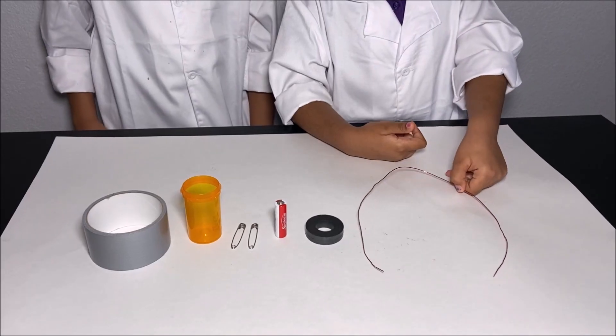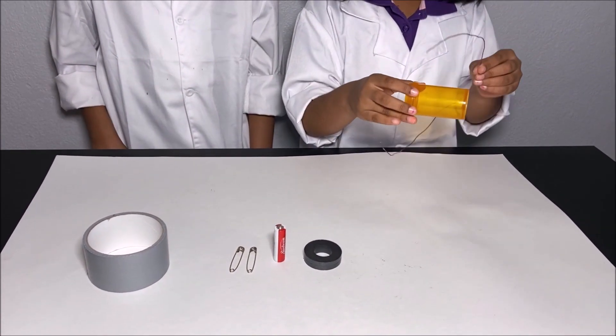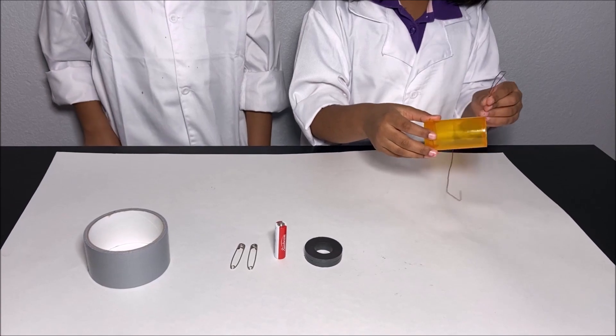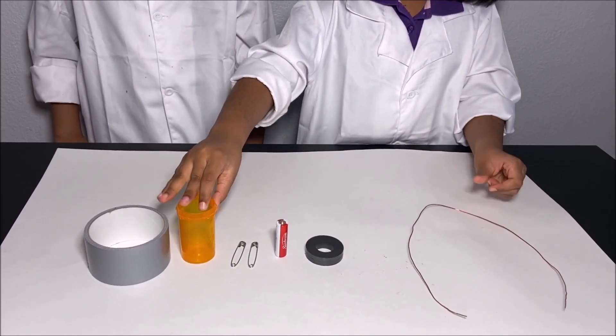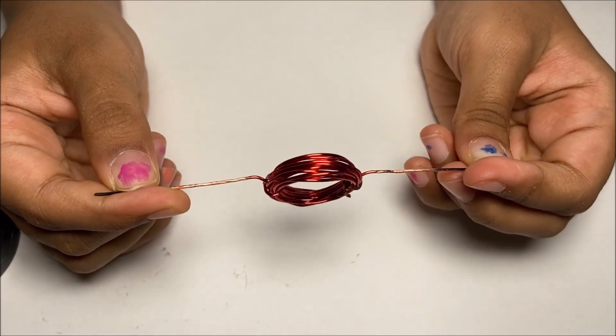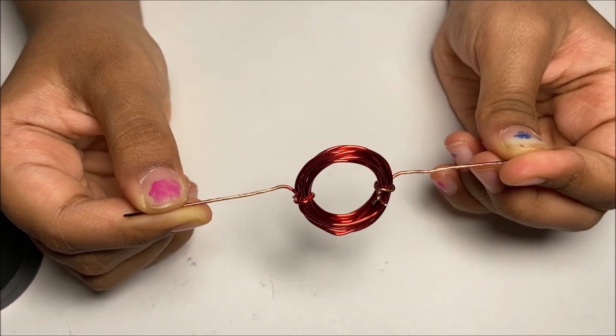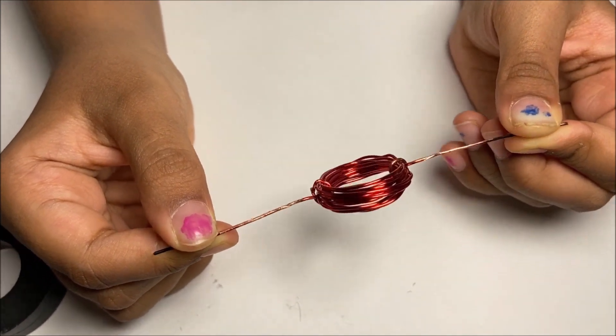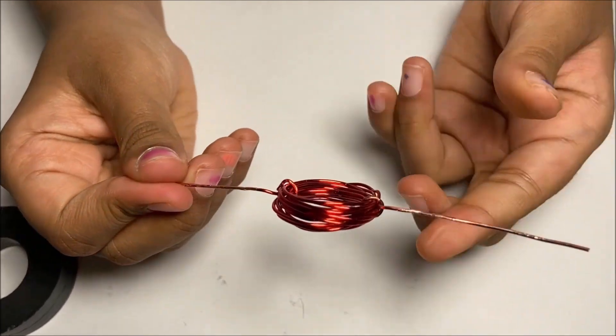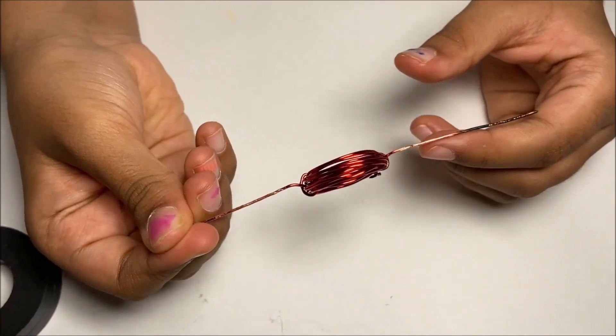First we're going to get our copper wire and our cylindrical object and wrap the copper wire around the cylindrical object to make a coil. Our parents made the coil out of the copper wire and removed the enamel from the ends of the coil to make the electricity flow through.